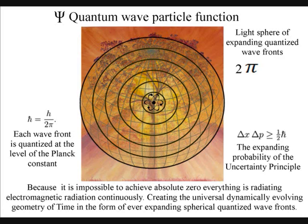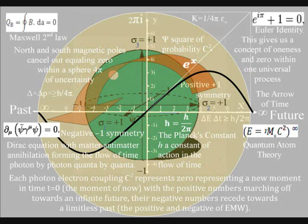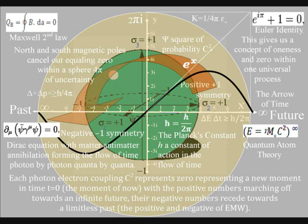Nothing has greater organization, or lower entropy, than a sphere, and the electron is the most spherical object in the universe. In this theory, time is a physical process of energy exchange, with the future unfolding with each photon-electron coupling.